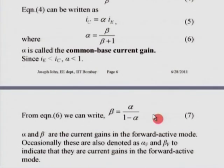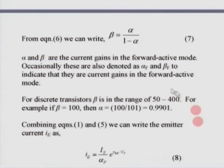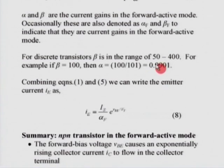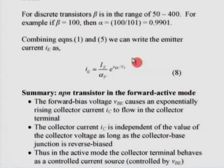α and β as normally written are the current gains in the forward active mode. Occasionally they are also denoted as α_f and β_f to indicate they belong to the forward active mode. β can be anywhere between 50 to 400; if β is 100, then α would be 0.9901. Combining the previous equations, we can write an expression for I_E as (I_S / α) × e^(V_BE / V_T).